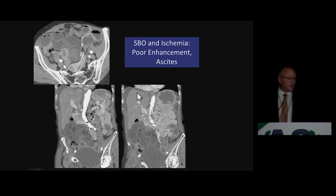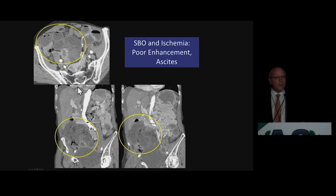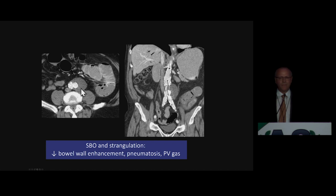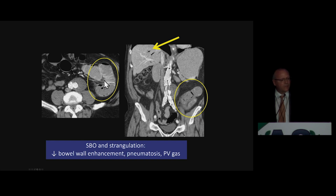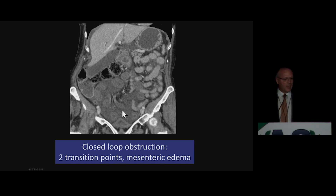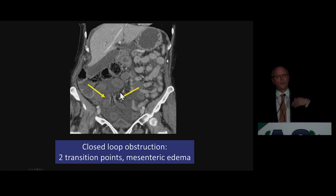A few examples of what you should be looking for. Yes, there is obstruction in this patient, but there are many signs of ischemia: the wall is thickened in the right lower quadrant, there is poor enhancement, and there is ascites. Ascites is a very ominous sign in the presence of bowel obstruction. Changes in enhancement: notice a transition from slightly hyper-enhancement to absent enhancement in the wall of this loop of small bowel, with edema in the mesentery and portal venous gas — all the signs we look for in ischemia and necrosis. Another patient with multiple thickened loops of bowel in the lower abdomen, dilated mesenteric edema, ascites, and the two transition points next to each other — a closed loop already with signs of ischemia and very likely necrosis.